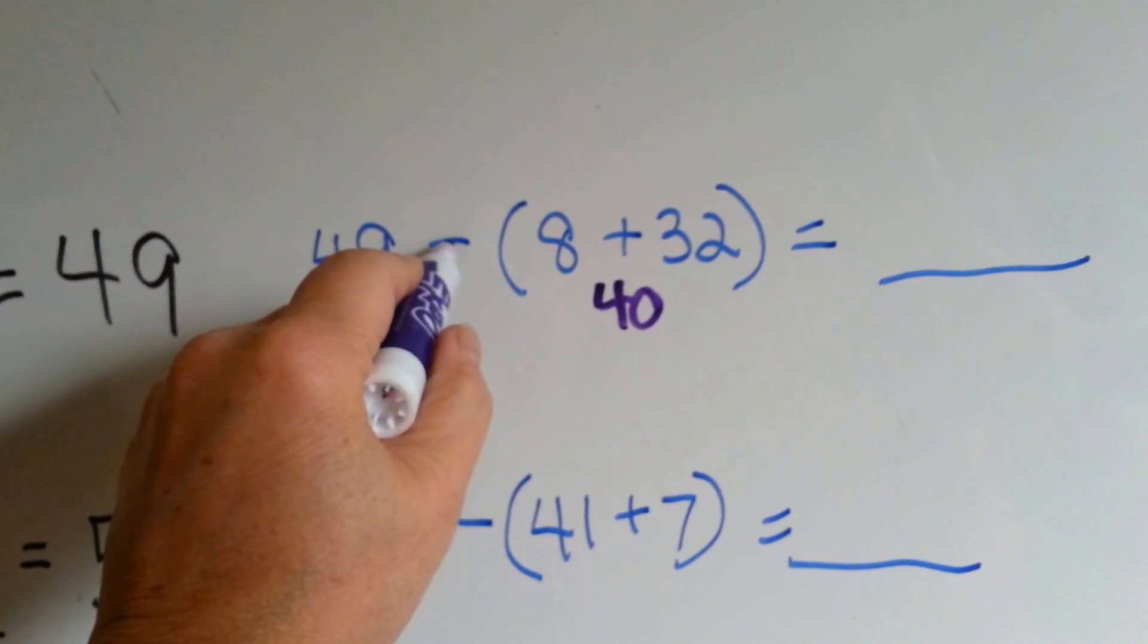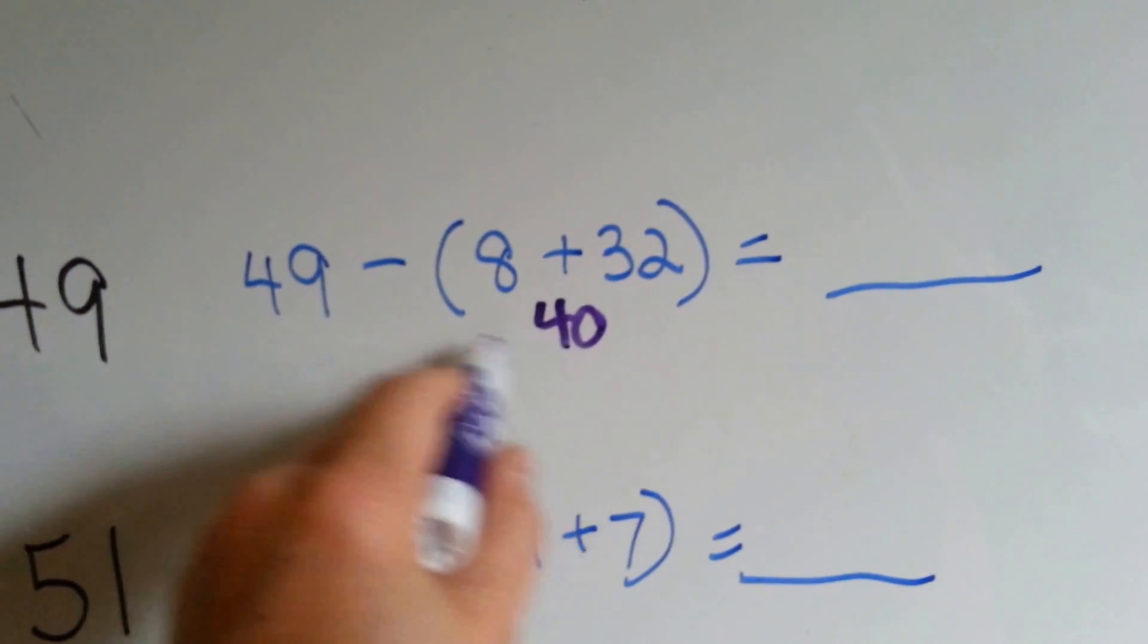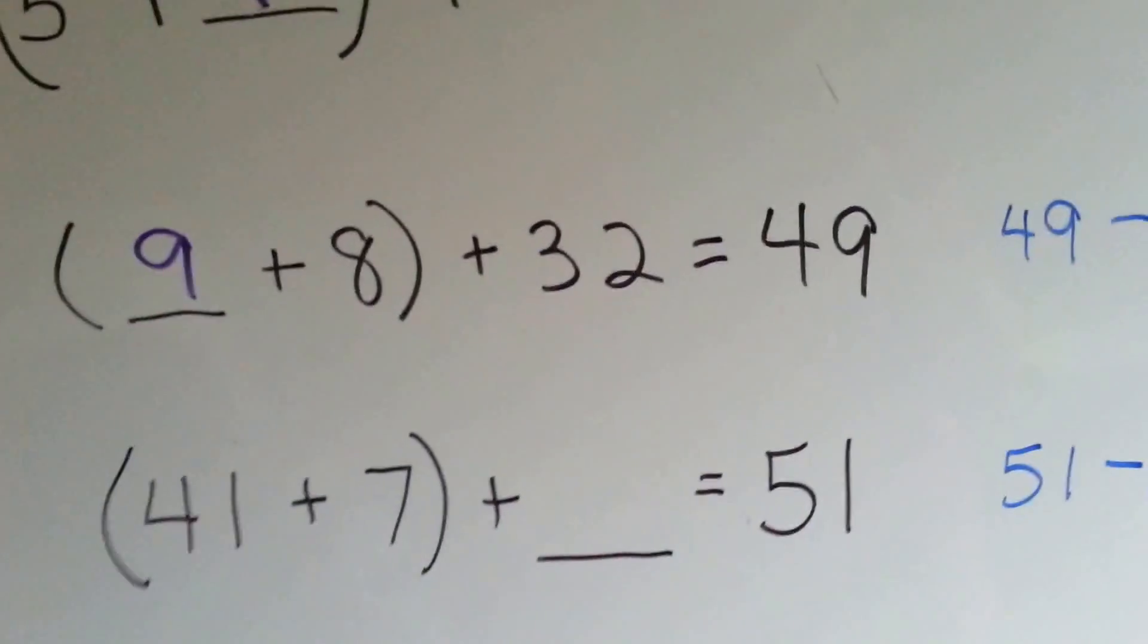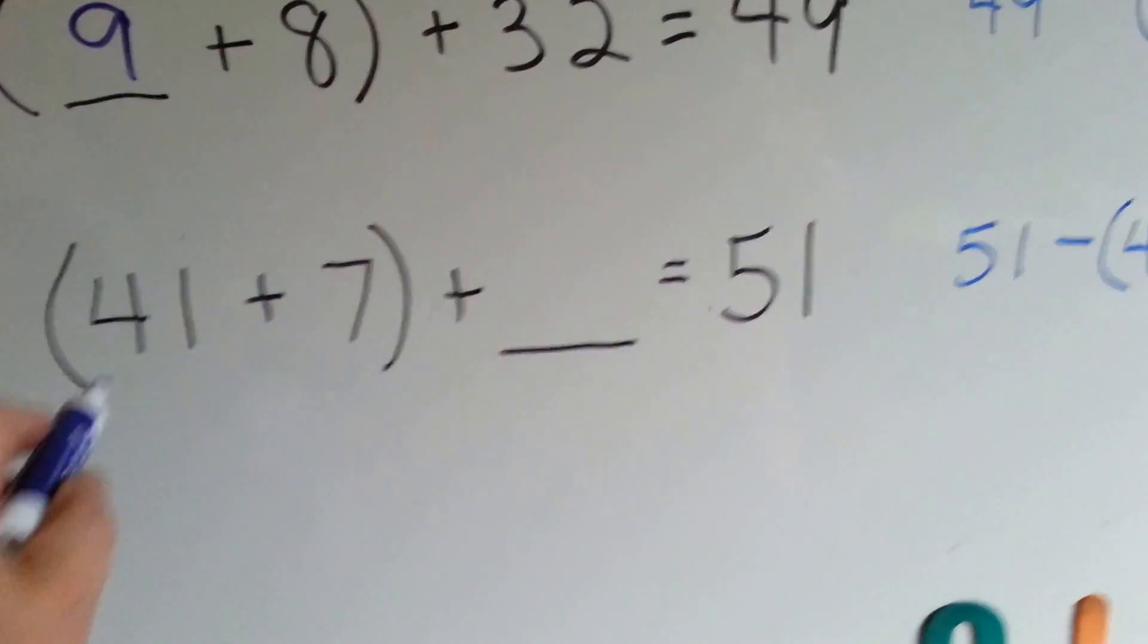49 minus 40 is 9. So our missing number is 9. 9 plus 8 plus 32 equals 49. What about this one?